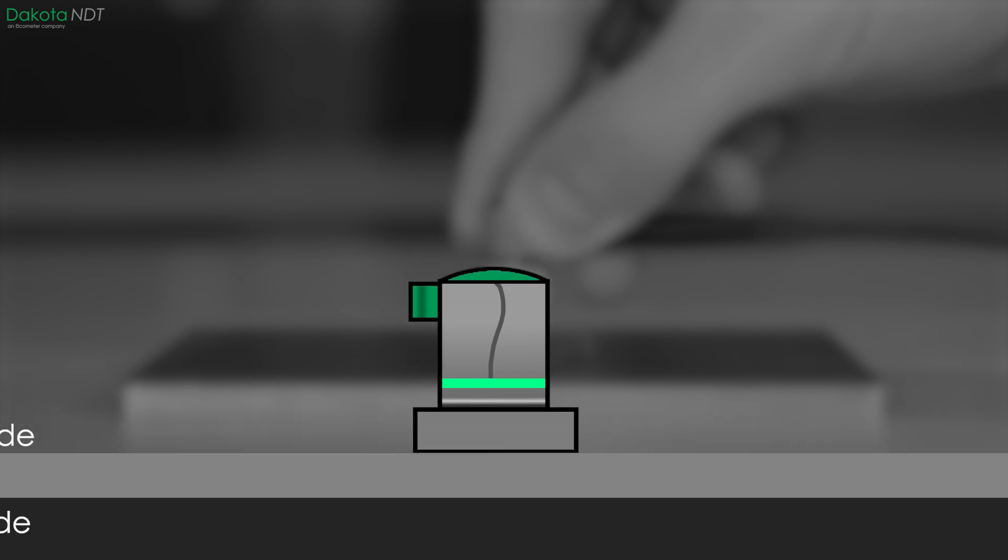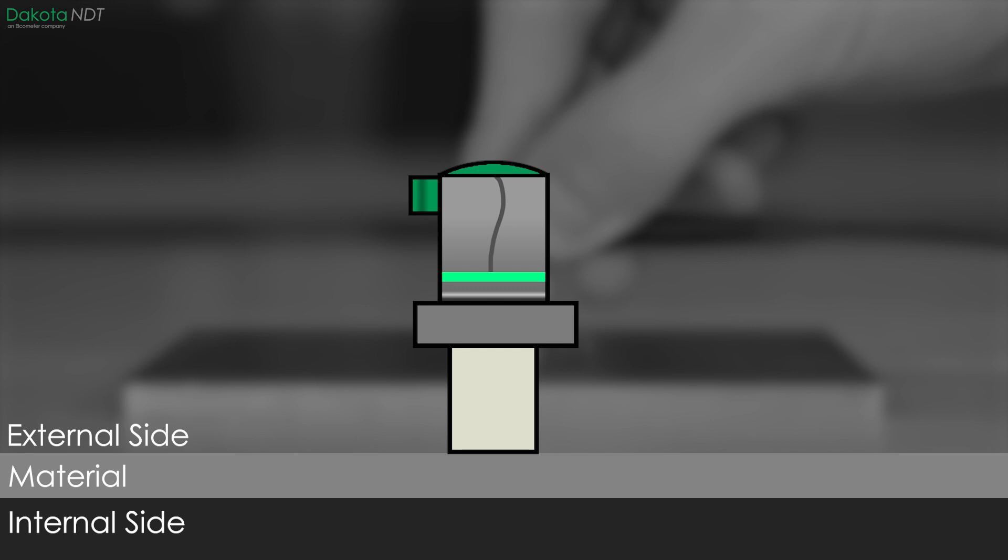When measuring thin materials with ultrasonic signals, the quick return of the signal poses a challenge as there may not be enough time between sending the pulse and receiving the echo. To address this, the Dakota PCX uses a delay line with a single element transducer to increase the time gap and improve accuracy.